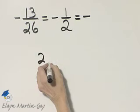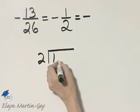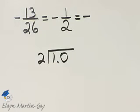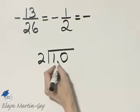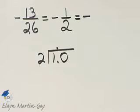So let's divide 2 into 1, decimal point 0. We'll insert 0s as we need them, and remember, there's my decimal point in my quotient.